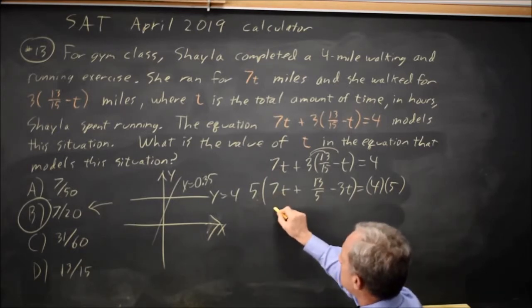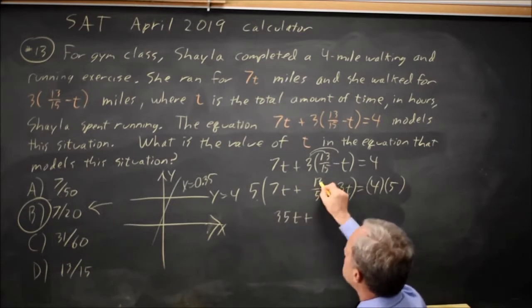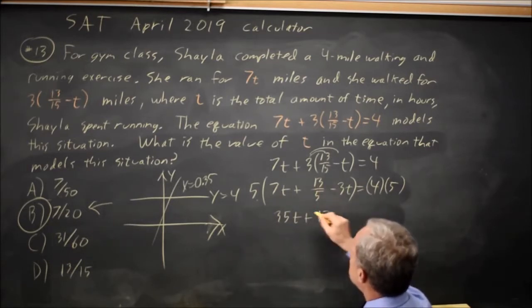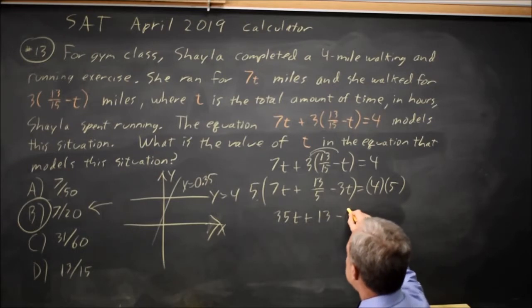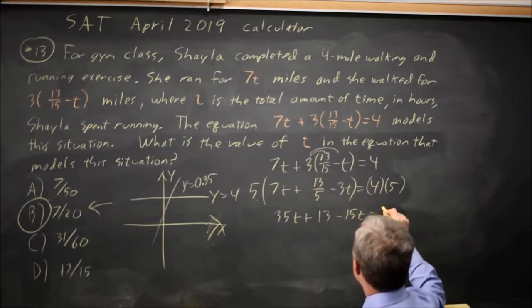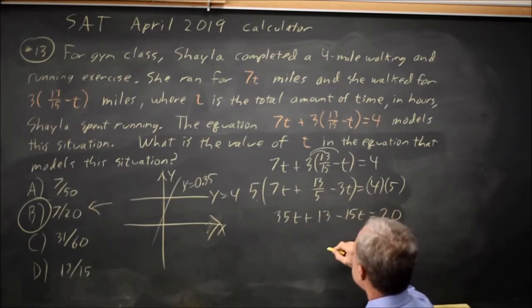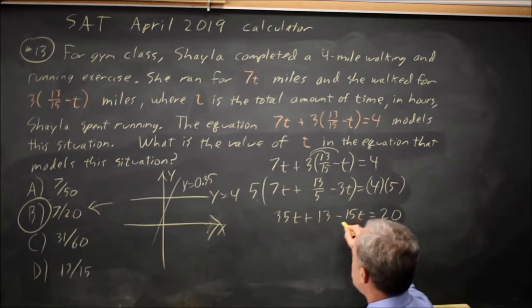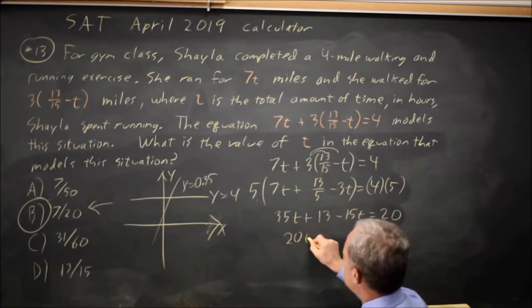So that's 5 times 7t is 35t, 5 times 13 over 5 is 13, 5 times negative 3t is negative 15t, and on the right 4 times 5 is 20. 35t minus 15t is 20t.